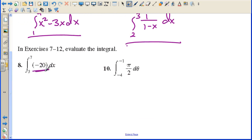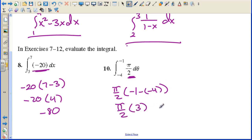Evaluate the integral. This is a constant, so we have negative 20 times 7 minus 3. So negative 20 times 4, negative 80. This is also a constant over here, pi over 2. So we have pi over 2 times negative 1 minus negative 4. It's always subtraction. So we have pi over 2 times 3, which ends up being 3 pi over 2.